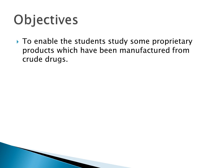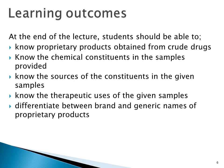The objective of this practical class is to enable you as a student to study some proprietary products that have been manufactured from crude drugs. At the end of this practical class, you are expected to know some proprietary products obtained from crude drugs, their chemical constituents, and the sources of those crude drugs. When giving sources, you should provide the full botanical source — genus name, species, author, and family — in order to get full marks. You should also know the therapeutic uses and be able to differentiate between brand and generic names of proprietary products.